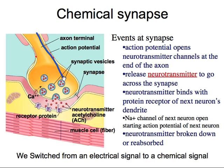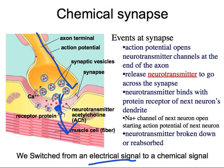Recap: the action potential moves down the axon and releases a neurotransmitter. The neurotransmitter goes across the synapse and binds to the receptor protein on the dendrite of the next neuron. That binding causes an action potential in the next neuron — the next neuron fires. So once we get to the end of the axon we switch from an electrical signal to a chemical signal (the neurotransmitter), and as soon as it binds, the neuron fires and we go back to an electrical signal.